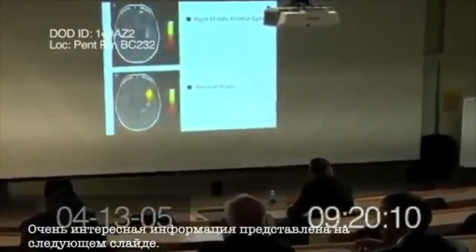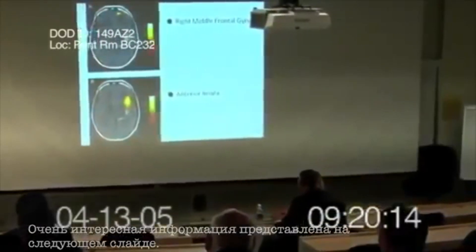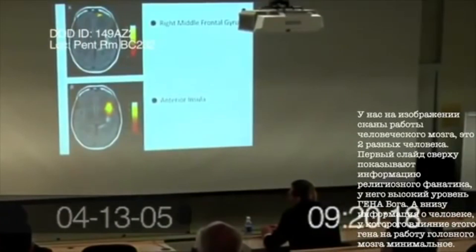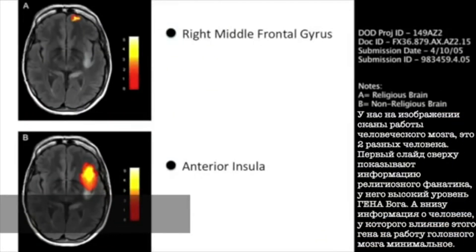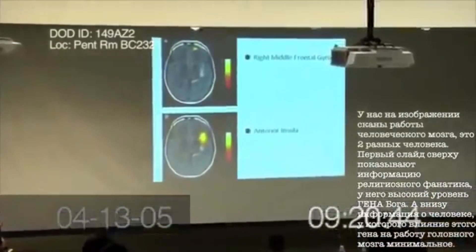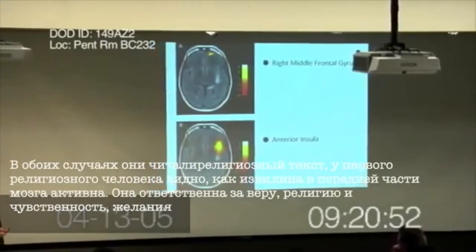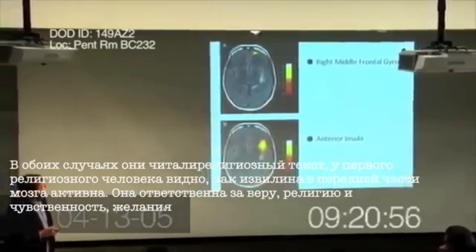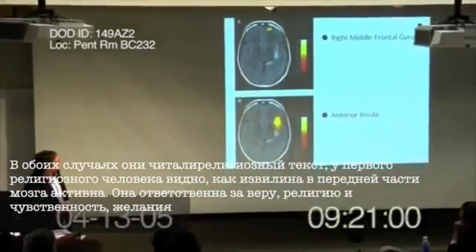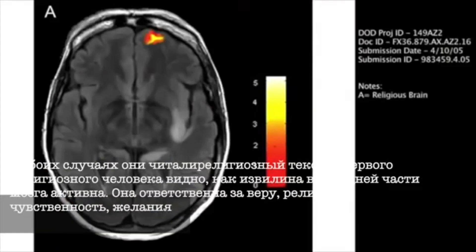We have some very remarkable data in this next slide. Here we have two brain scans — these are fMRIs — of two different individuals with different levels of expression of VMAT2. On top is an individual who's a religious fanatic and has high levels of VMAT2. This individual down here, who had low levels of the VMAT2 gene, would self-describe as not particularly religious. In each case, these individuals were read a religious text. This individual lit up the right middle frontal gyrus, shown here.